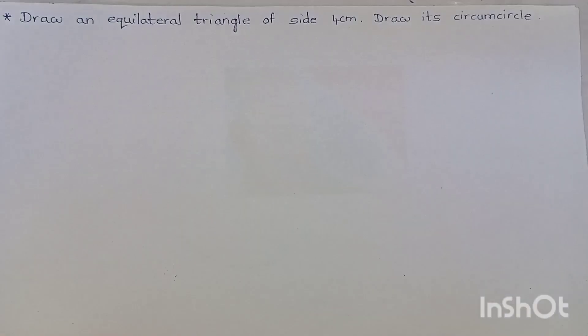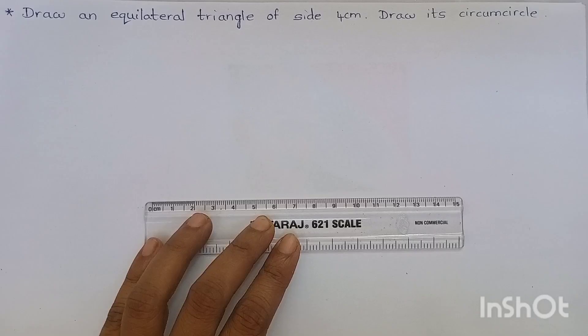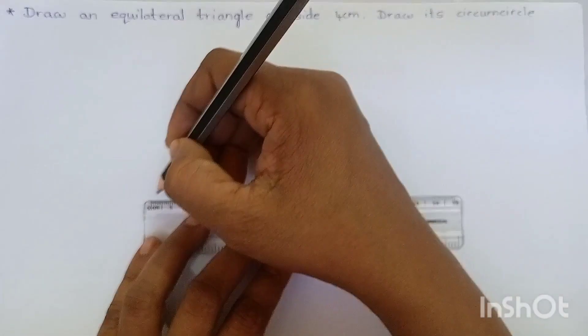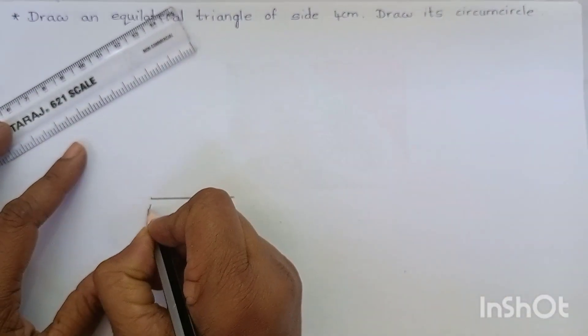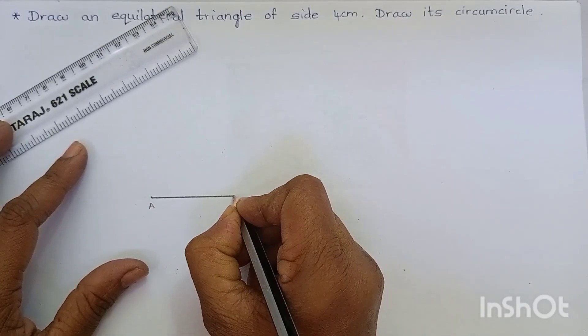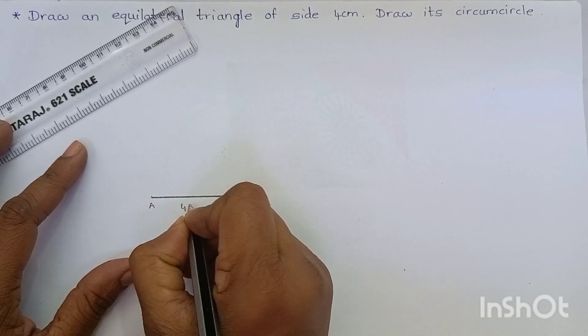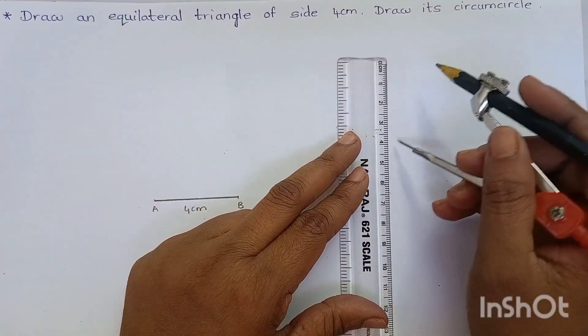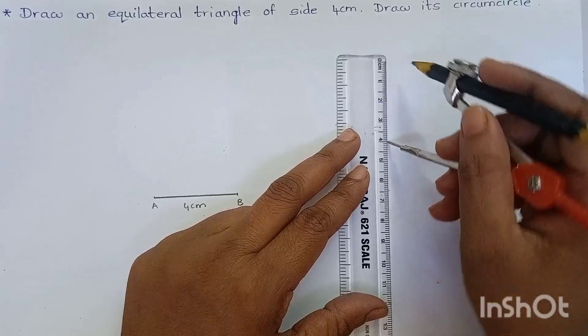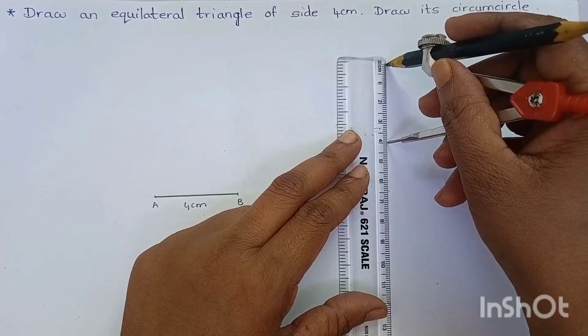So, let's draw a triangle so that all the sides must be equal to 4 cm. Draw a line of 4 cm and let me name it as AB. AB is 4 cm. With the help of ruler and compass, mark 4 cm. Look at this. This is 4 cm.